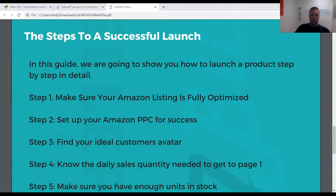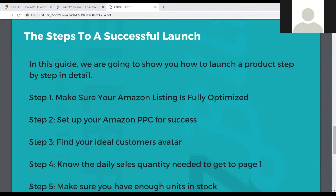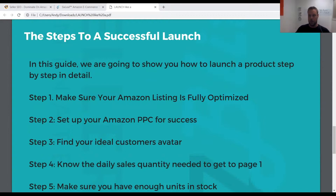If your product only has two or three bullet points, you've got a big issue. I get so many people coming to me saying 'I'm not selling, I'm not ranking, what's going on?' and I pull their listing up and they've got two or three bullet points. I tell people you have to look at your listing and optimizing it as like deposits in a bank — the foundation of your Amazon business. The more you put into it, the more it's going to return in the long run.